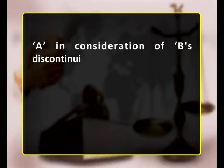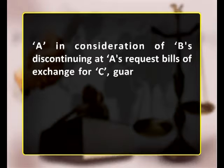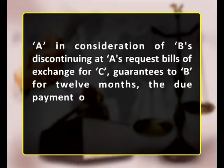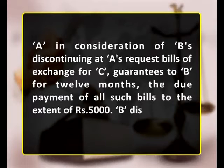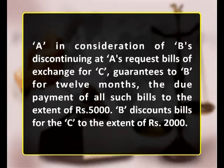A guarantee once acted upon is not revocable, but Section 130 provides for revocation of a continuing guarantee. Section 130 provides that a continuing guarantee may at any time be revoked by the surety as to future transactions by notice to the creditor. For example, A, in consideration of B's discontinuing at A's request bills of exchange for C, guarantees to B for 12 months the due payment of all such bills.